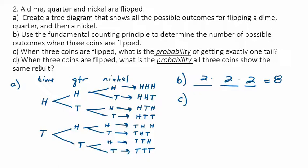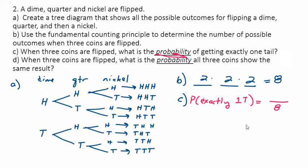Now for probability: when three coins are flipped, what is the probability of getting exactly one tail? The total possible outcomes is 8. Looking at our sample space, exactly one tail appears in HTH... wait — let's count: the tail can be in the first flip, the second flip, or the third flip. That's three outcomes. So the probability is 3 out of 8.